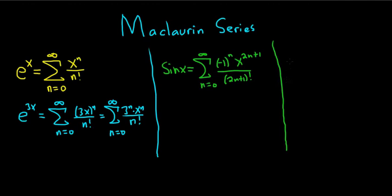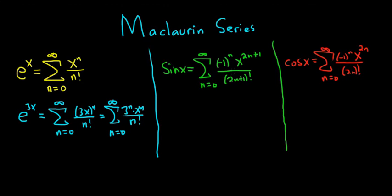Cosine is very similar. Cosine of x is equal to the infinite sum as n runs from zero to infinity. It also has the negative 1 to the n, except cosine is an even function so it has even powers of x. It's a nice way to memorize the formula: sine is odd, so it only has odd powers — 2n plus 1 is always odd. Cosine is even, 2n is always even, so if you know that you'll know the formula.